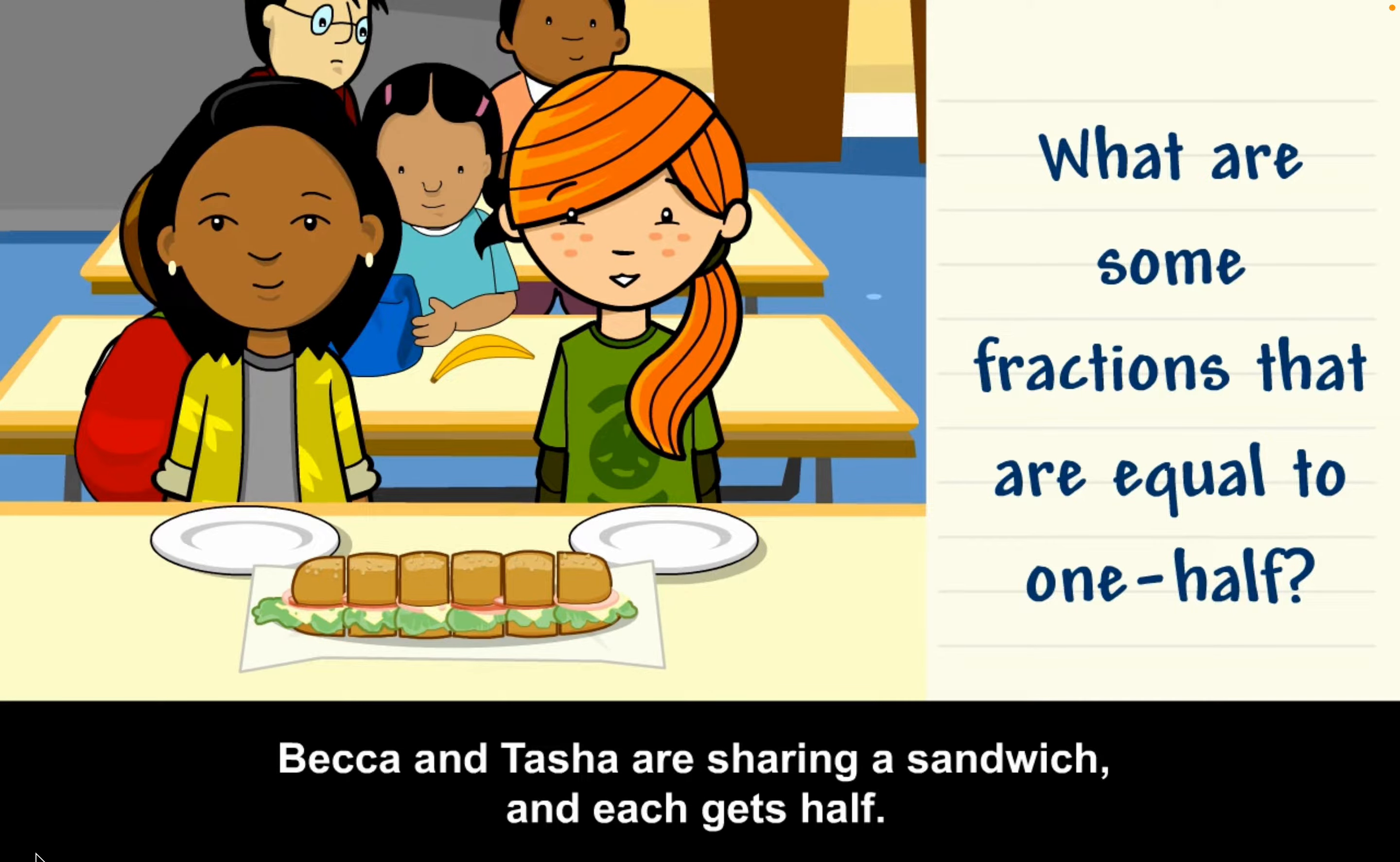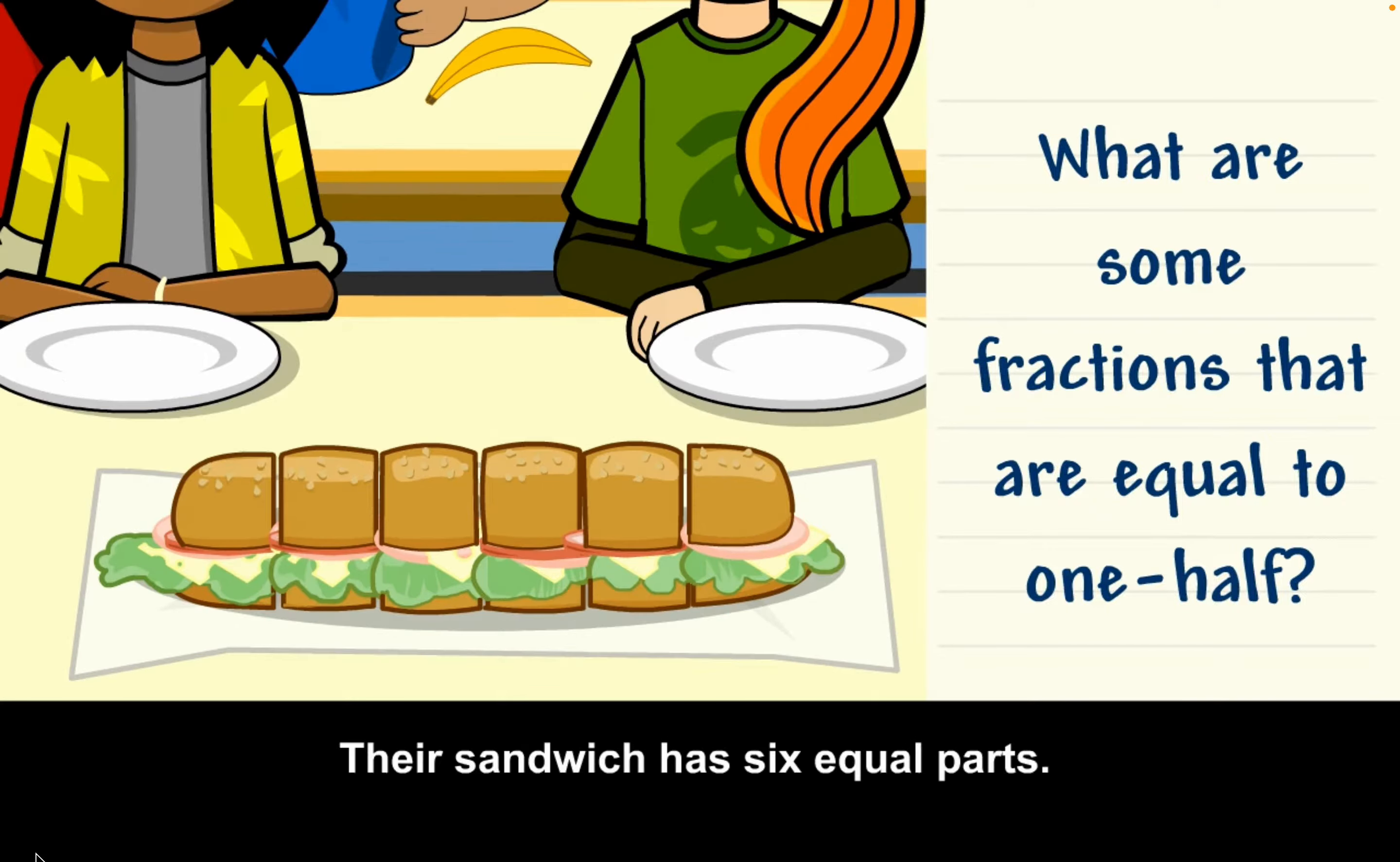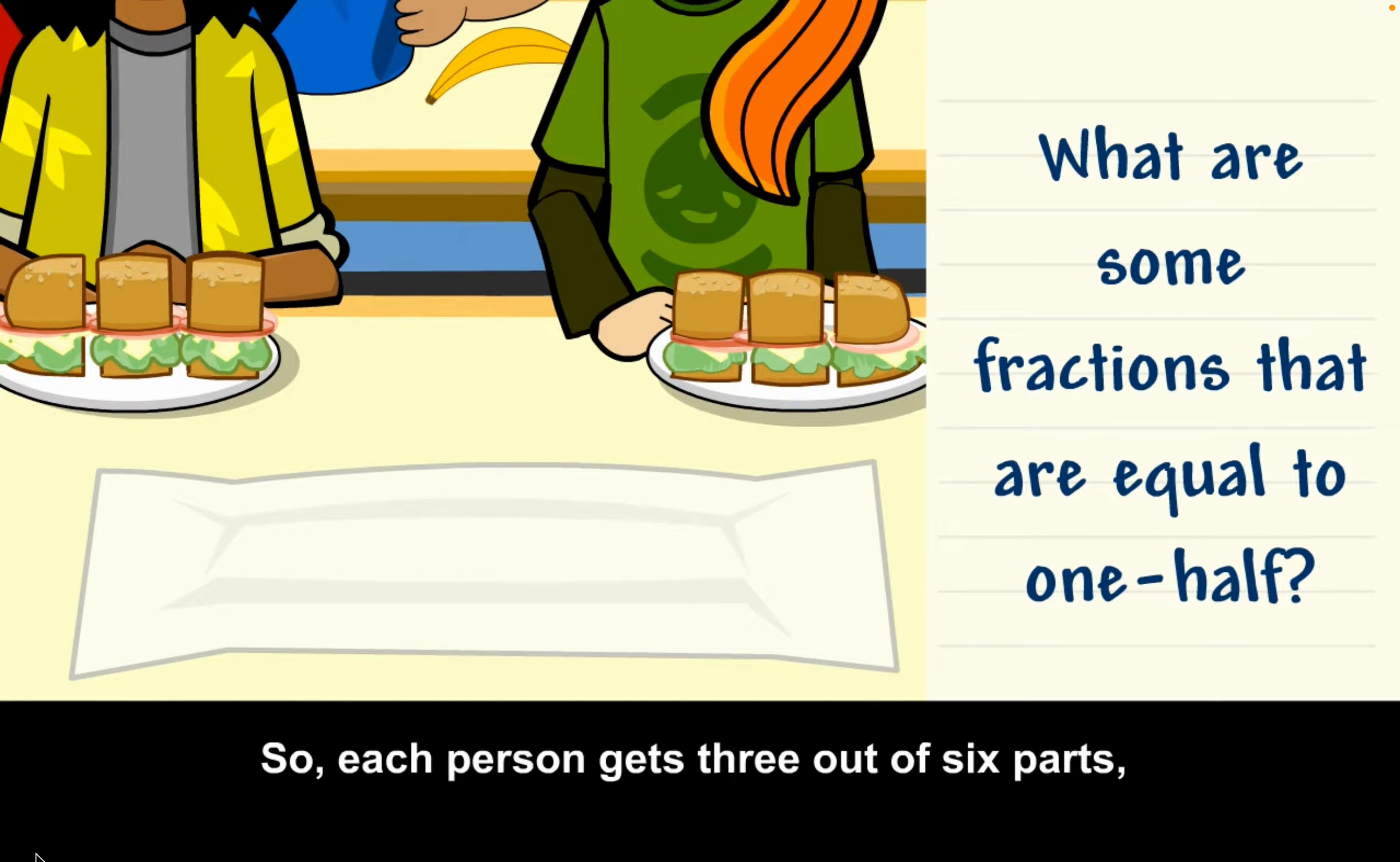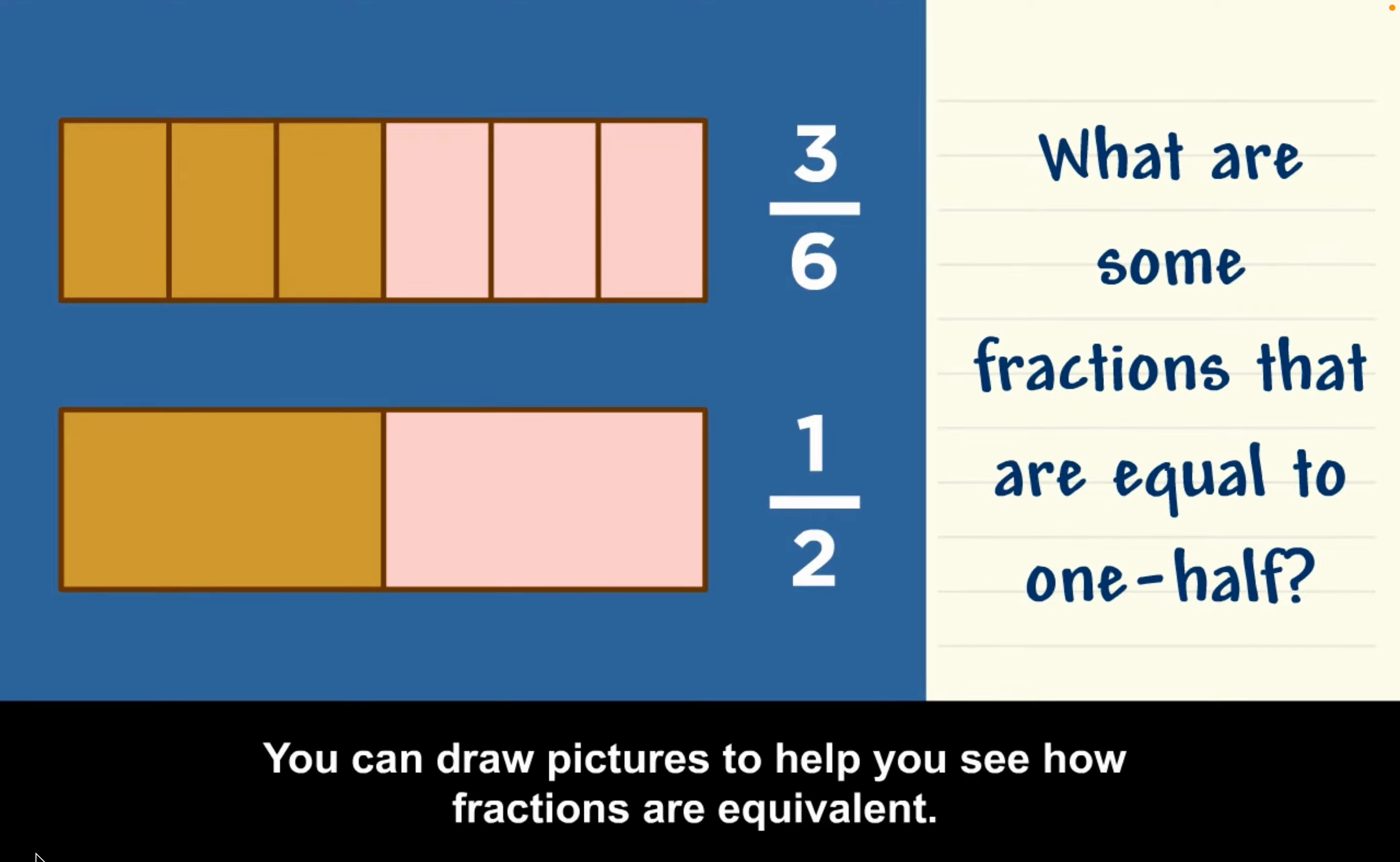Becca and Tasha are sharing a sandwich, and each gets half. Their sandwich has six equal parts, so each person gets three out of six parts, or three-sixths of the sandwich. You can draw pictures to help you see how fractions are equivalent.